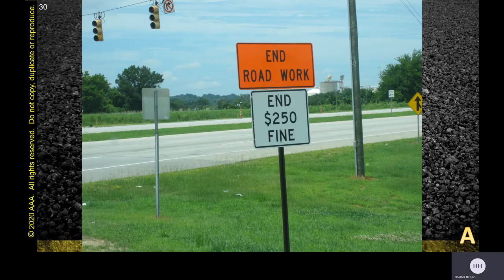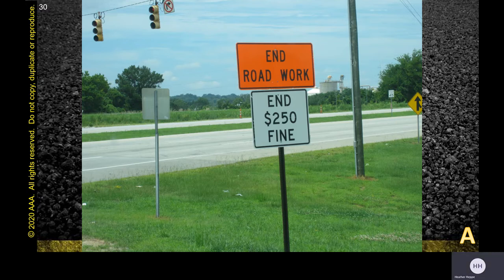Here's a black and white picture — write down what color the top sign should be. It says 'end road work,' which we would know is for a special construction area. The color shown is incorrect. Hopefully you wrote down that the top sign should be orange, since it's a construction sign, and the bottom sign was correctly black and white as a regulatory sign.